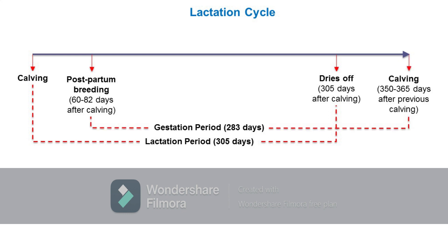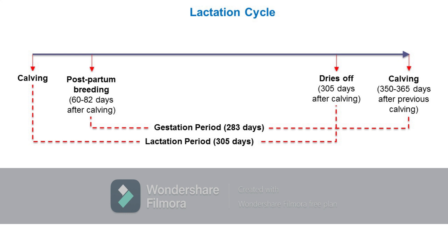After a successful breeding, the cow proceeds to a gestation period of about 283 days, and the cow calves again, giving a 350 to 365 day interval between two calvings.